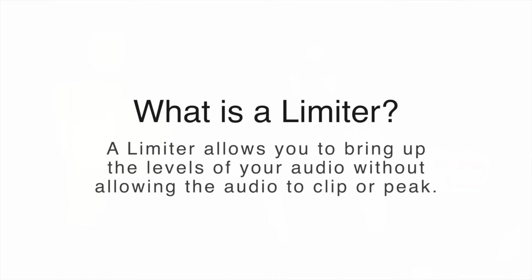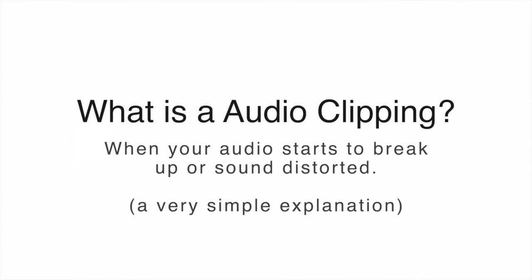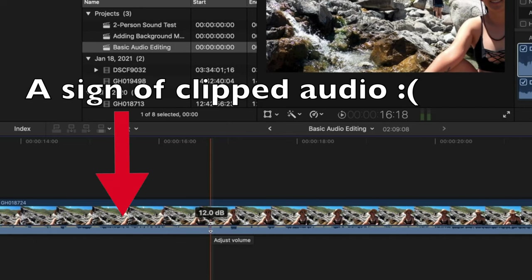The next thing I do is apply a limiter. The limiter allows you to bring up the levels of your audio without allowing the audio to clip. Audio clipping is when your audio starts to break up or sound distorted — it's usually caused when your subject is too loud and your microphone is too sensitive. If you have clipped or peaked audio, it's extremely hard to recover, so the best way to get around that is to re-record your audio. To avoid clipping while filming, monitor your audio and lower the sensitivity of your microphone before recording. If your audio clipped and the levels show yellow and red in Final Cut, you may want to consider re-recording.